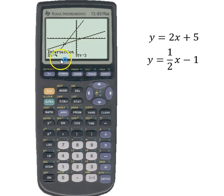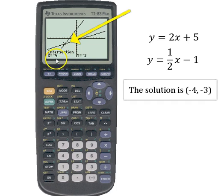Now here you can see that your intersection is blinking. That's the solution for your system. That solution is an ordered pair, negative 4, negative 3. The x value is negative 4, and the y value is negative 3.